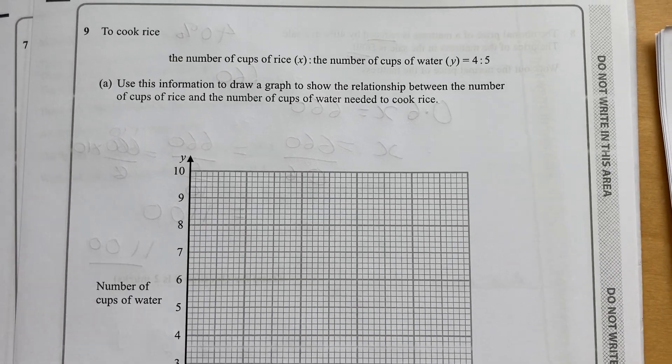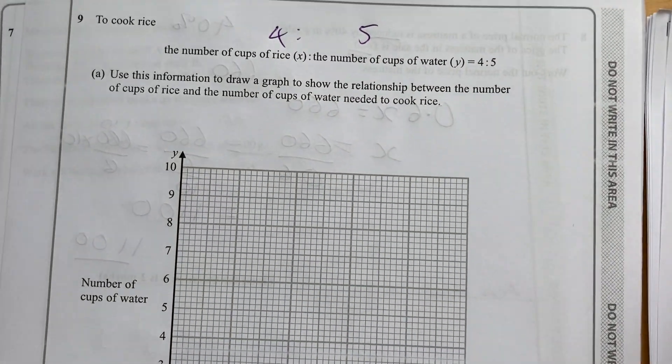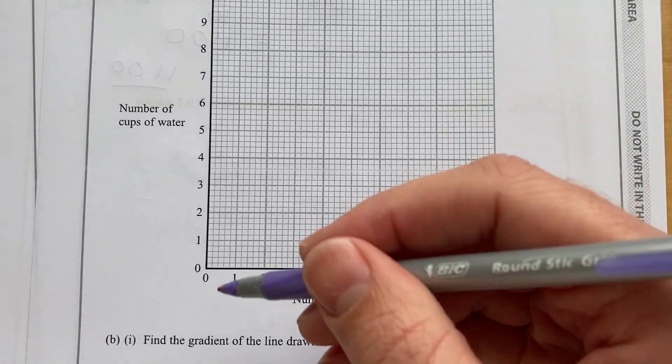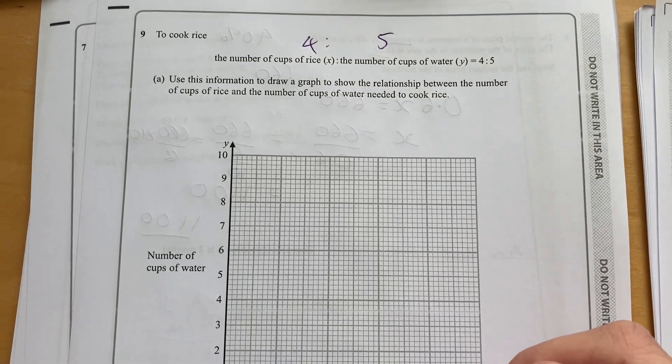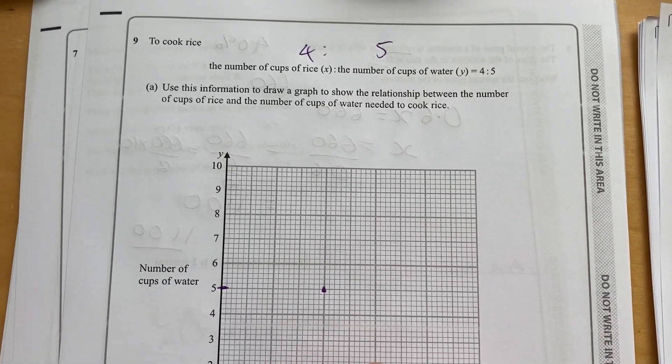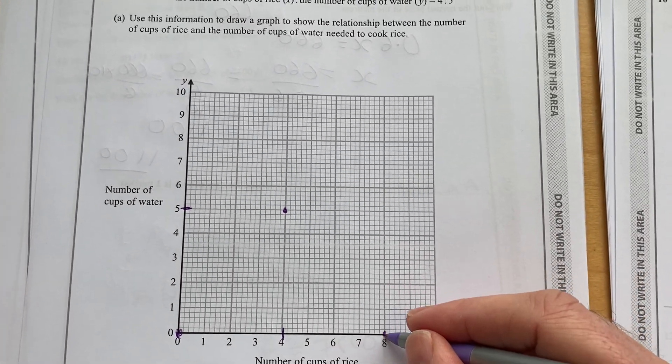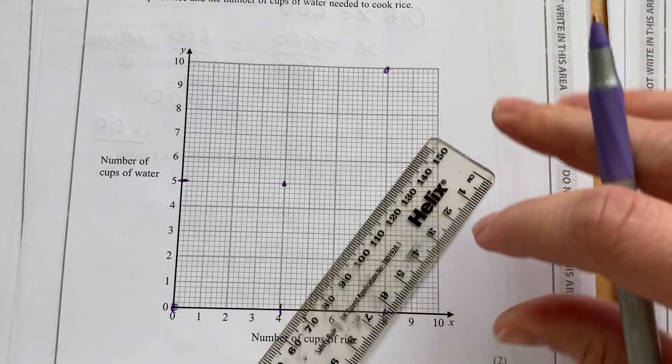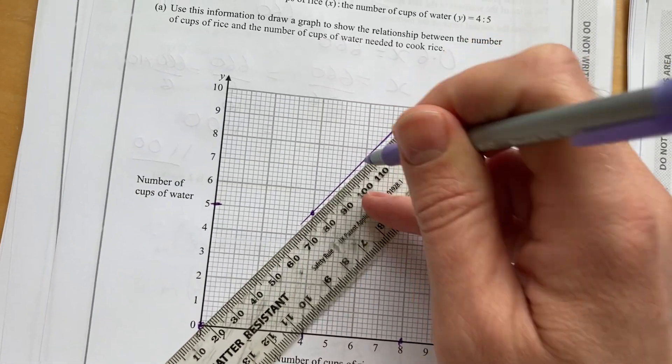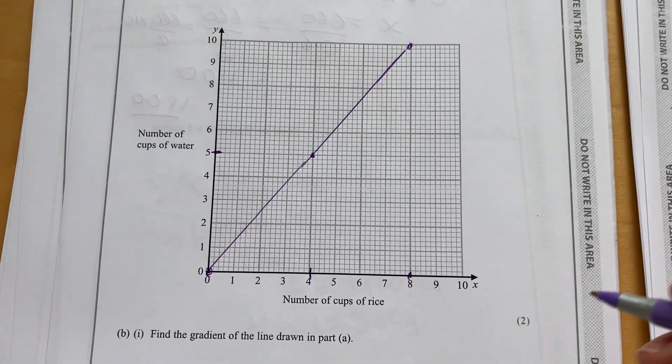A couple more questions in this video before we take a break. Let's look at question 9. The number of cups of rice has a ratio to the number of cups of water of 4 to 5. Use this information to draw a graph to show the relationship between the number of cups of rice and the number of cups of water needed to cook the rice. So, rice at 4. Water is 5. Let's do another one. So, at 8, it would be 10. Take my ruler. Make sure they're in a straight line.